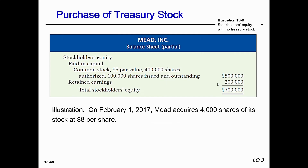On February 1st, 2017, Mayat acquires 4,000 shares of its stock at $8 per share. The journal entry: debit treasury stock for $32,000 (4,000 shares × $8), and credit cash $32,000. Treasury stock is debited because it's a contra equity account — it has a normal debit balance.